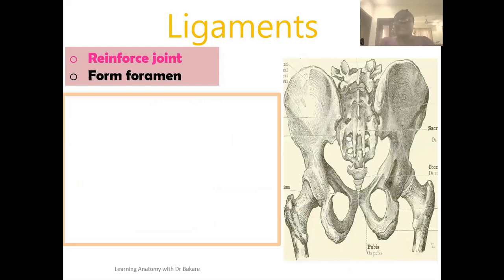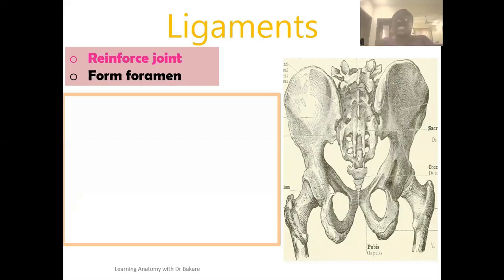Now let's go through the ligaments, another structural component of the posterior gluteal region. Ligaments reinforce the joints of the pelvic cavity and also transform the notches into foramina. Some ligaments transform notches into foramina while another set reinforce the joints around the pelvic region. The pelvic cavity is made up of different bones that come together at joints, with the ilium superiorly and the ischium inferiorly at the posterior region.